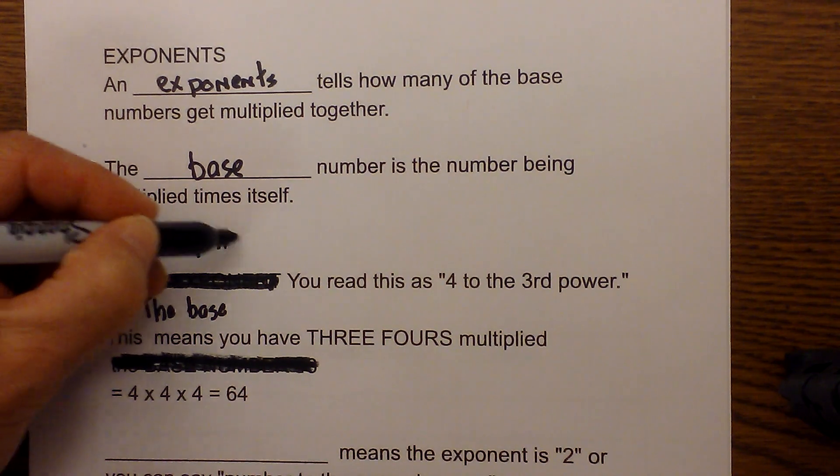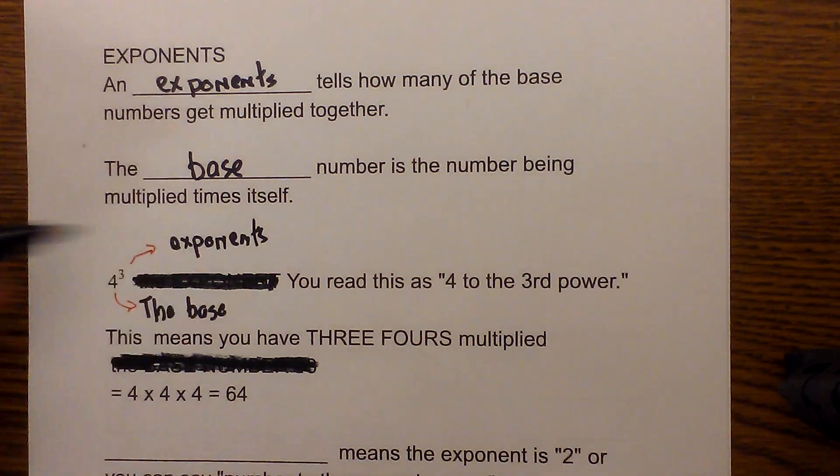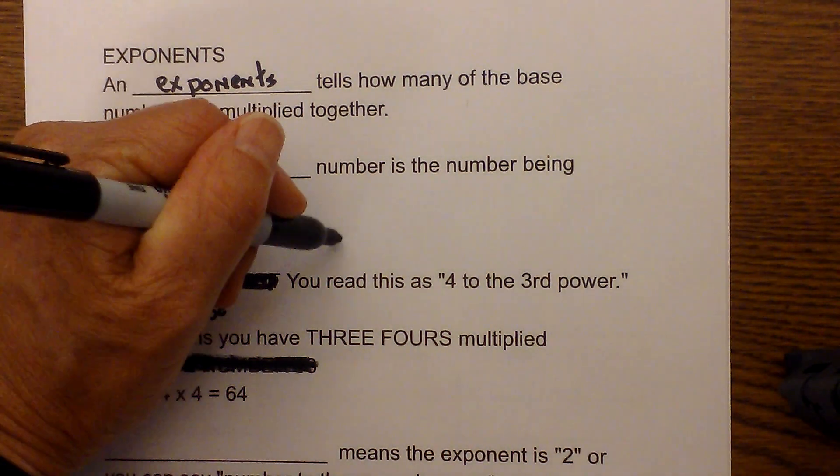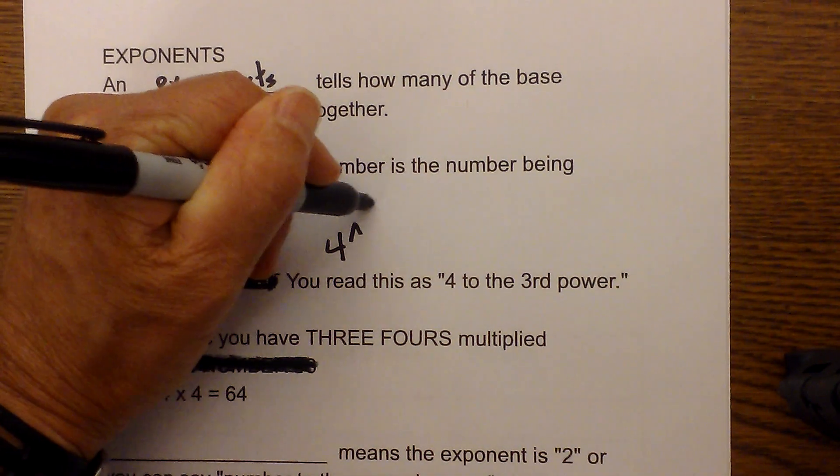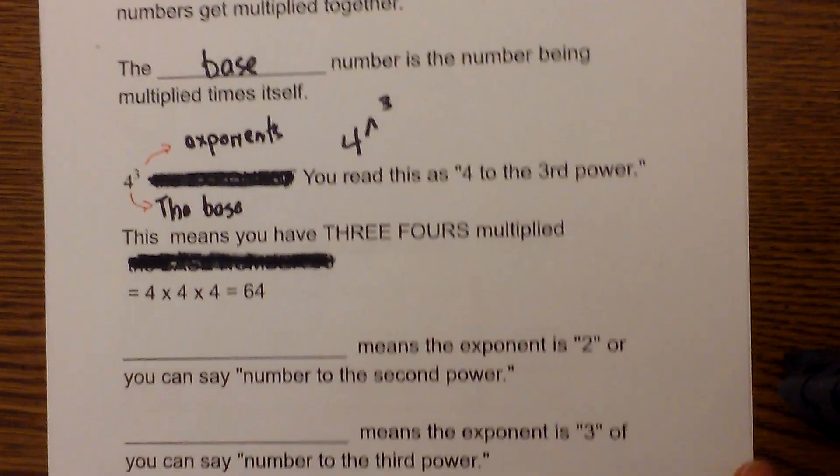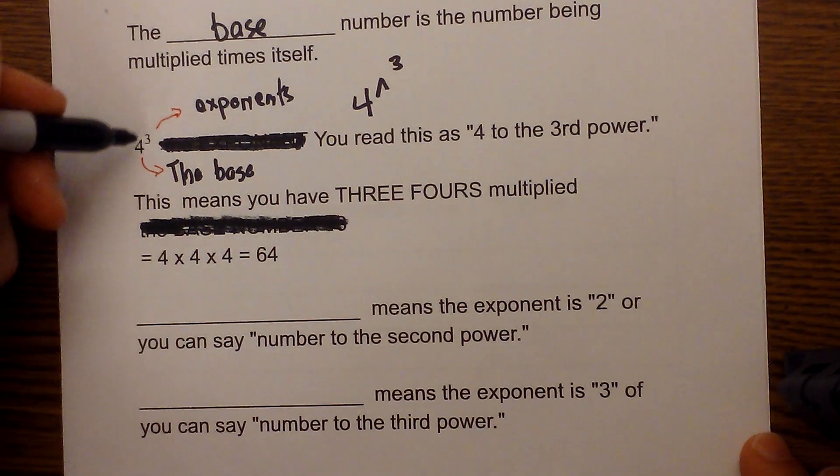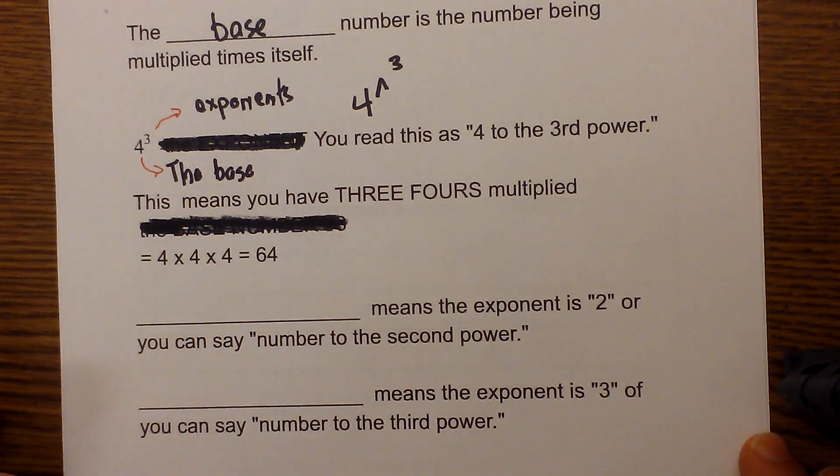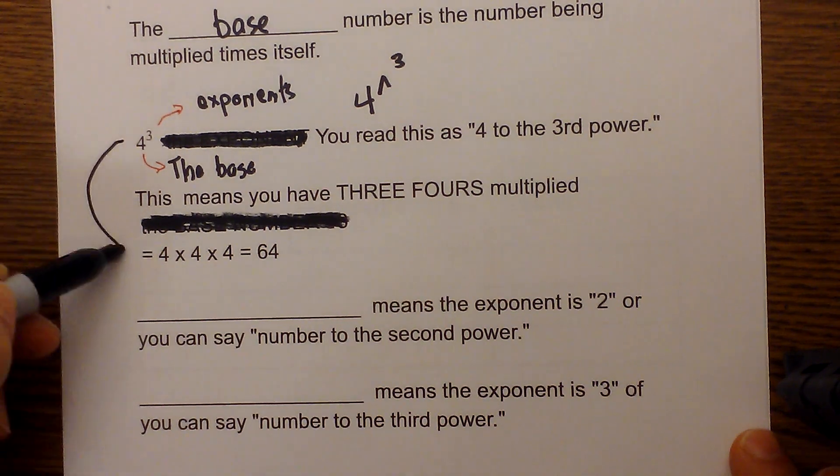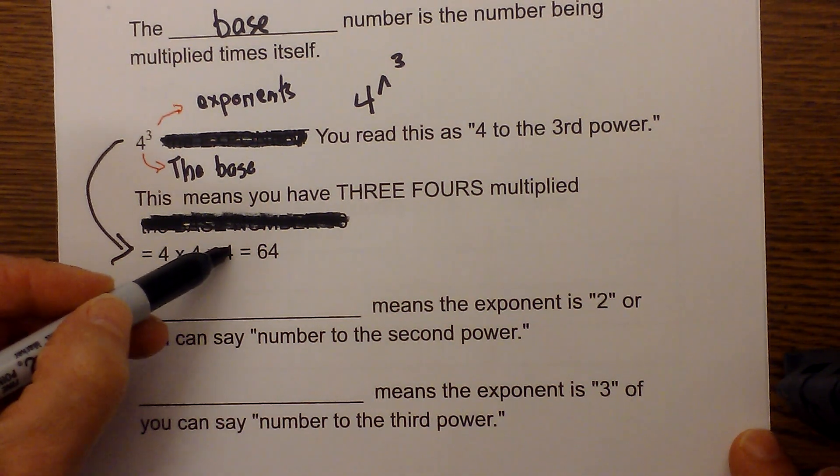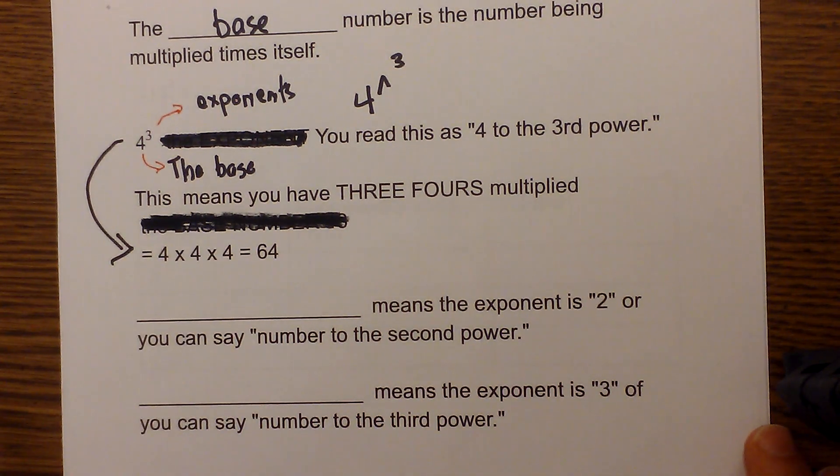I'll look at a couple more examples. Here are the basics: the 4 is the base and the 3 is the exponent. Sometimes it may be written like this but it's the same thing. When you have 4 to the 3rd, this means you have three 4s multiplied together. So this would equal 4 times 4 times 4, which equals 64.